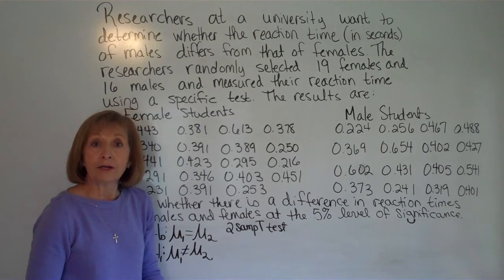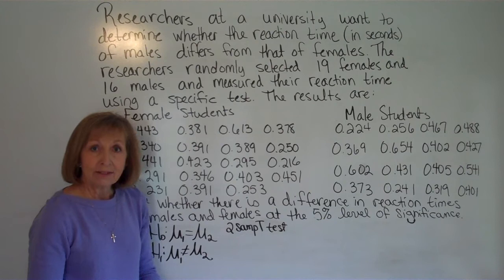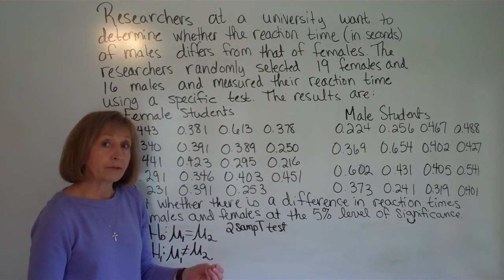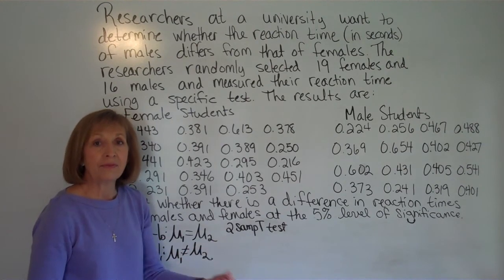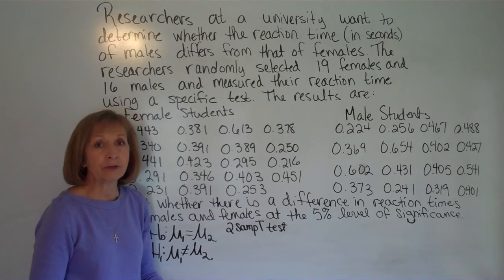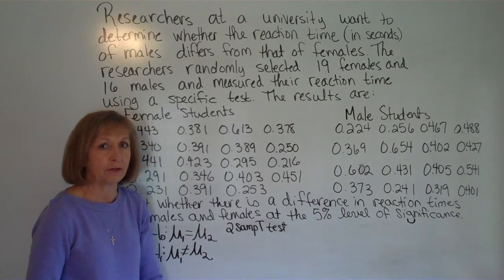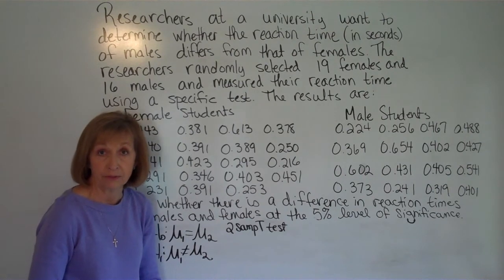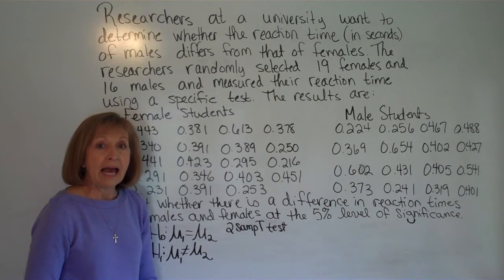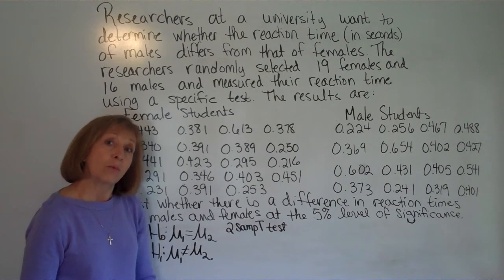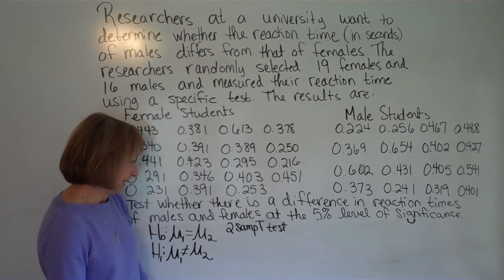Then it'll ask you where your information's at. So across from your first group you're going to have L1 and then L2 from the second and then frequency list is just put the number one after it. Don't have a list after it. We don't have any frequency list that goes along with either of these groups.